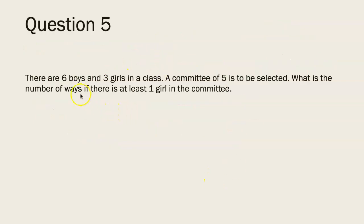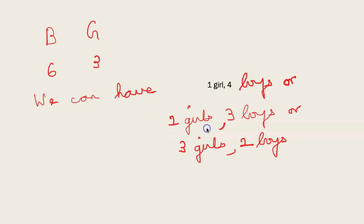Question 5: There are 6 boys and 3 girls in a class. A committee of 5 is to be selected. What is the number of ways if there is at least 1 girl in the committee? We have 6 boys and 3 girls. We can have 1 girl 4 boys or 2 girls 3 boys or 3 girls 2 boys. Why can't we have 4 girls 2 boys? Because there are only 3 girls.